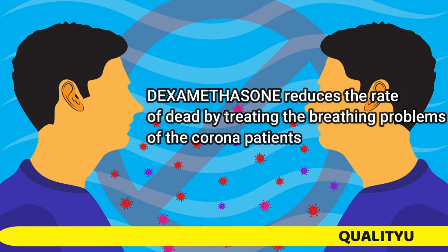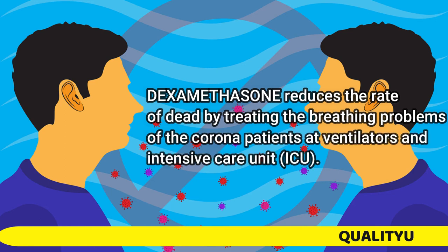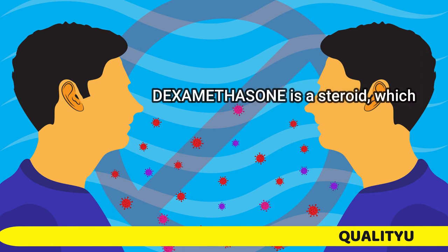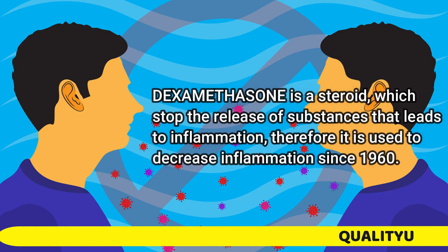Dexamethasone reduces the rate of death by treating the breathing problems of Corona patients on ventilators and in the Intensive Care Unit, ICU. Dexamethasone is a steroid which stops the release of substances that lead to inflammation, and therefore it has been used to decrease inflammation since 1960.